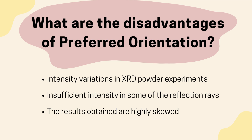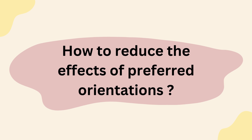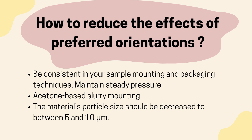What are the disadvantages of preferred orientation? The disadvantages are: intensity variations in XRD powder experiments, insufficient intensity in some of the reflection rays, and lastly the results obtained are highly skewed. To reduce the effects of preferred orientation, we need to be consistent in the sample mounting and packaging techniques by maintaining steady pressure. Next, use acetone-based slurry mounting, and lastly the material's particle size should be decreased to between 5 and 10 micrometers.